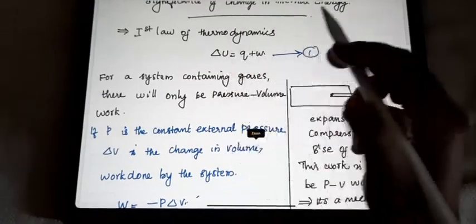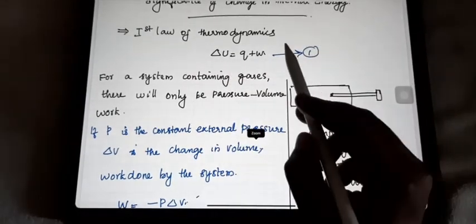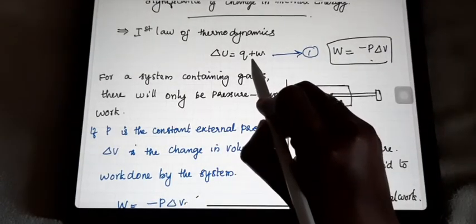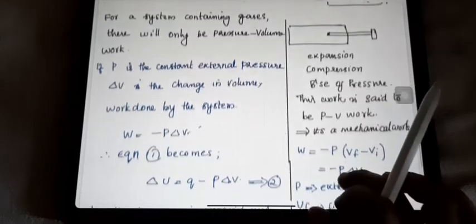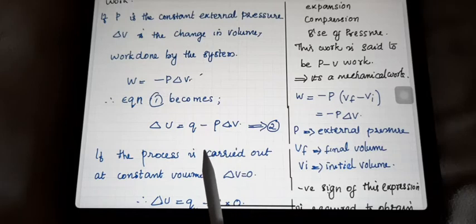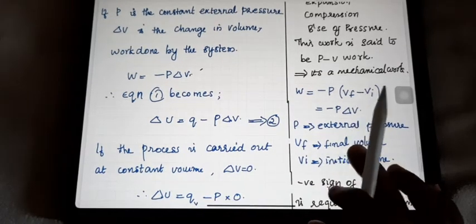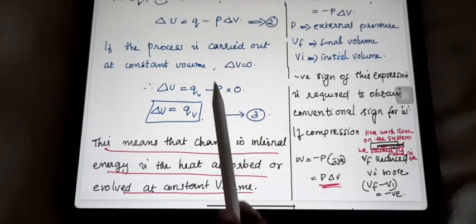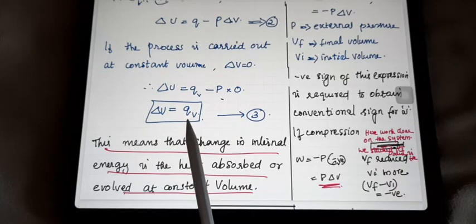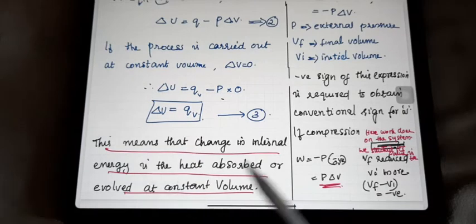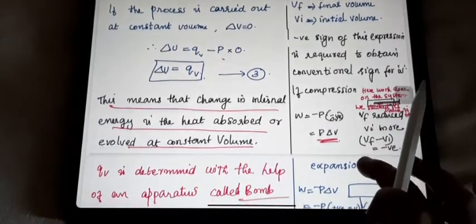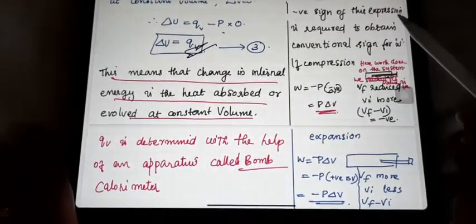Coming back to the first law again: delta U is equal to Q plus W. We discussed that W = -PΔV. Substituting this into the first law, delta U equals Q plus (-PΔV). Now, if this process is carried out at constant volume, then delta V equals zero. Applying this, the P delta V term becomes zero. So delta U equals QV — the heat at constant volume. Here, delta U means change in internal energy, which equals Q at constant volume. Heat may be absorbed or evolved, and it equals delta U. This is an important result.